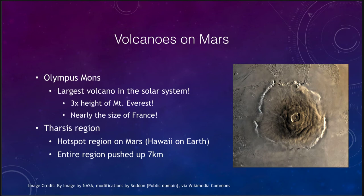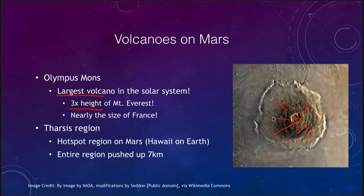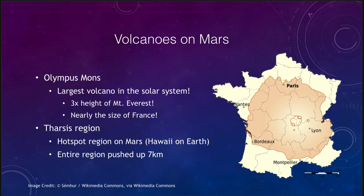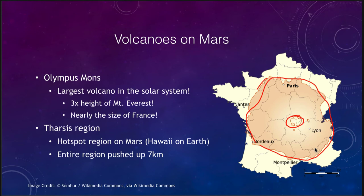First, let's look at volcanoes — specifically Olympus Mons. Olympus Mons is the largest volcano in the entire solar system. It is three times the height of Mount Everest, so climbing Mount Everest would be the equivalent of getting only one third of the way up Olympus Mons. The peak here is the caldera, where lava would have flowed out and then down the sides, spreading out over the surface over billions of years. To get an idea of how big it is — it's about the size of France. The caldera alone is just a small section of this incredibly large volcano.